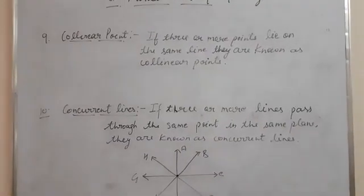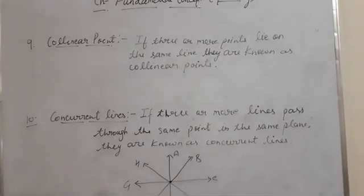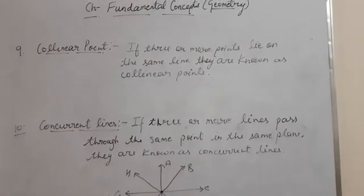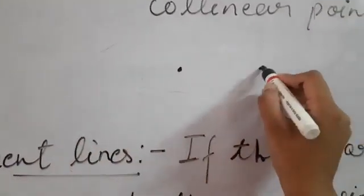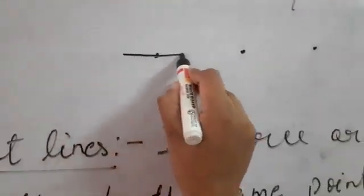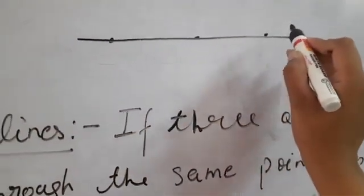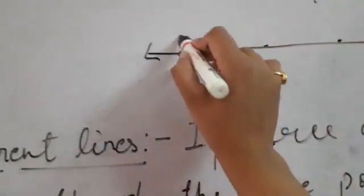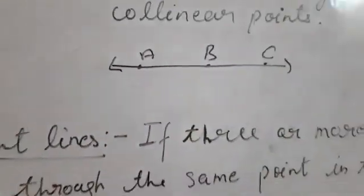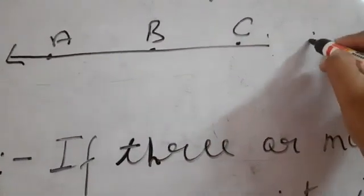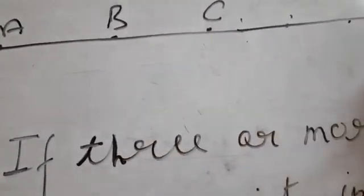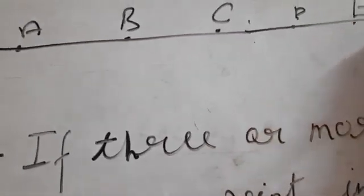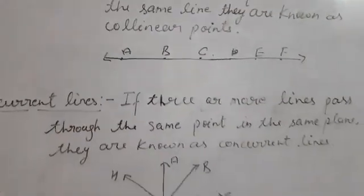The next concept is collinear points. If three or more points lie on the same line, they are known as collinear points. For example, if I make three points and join all three, they appear to be on the same line. These three points are called collinear points. All points which appear on the same line are known as collinear points.